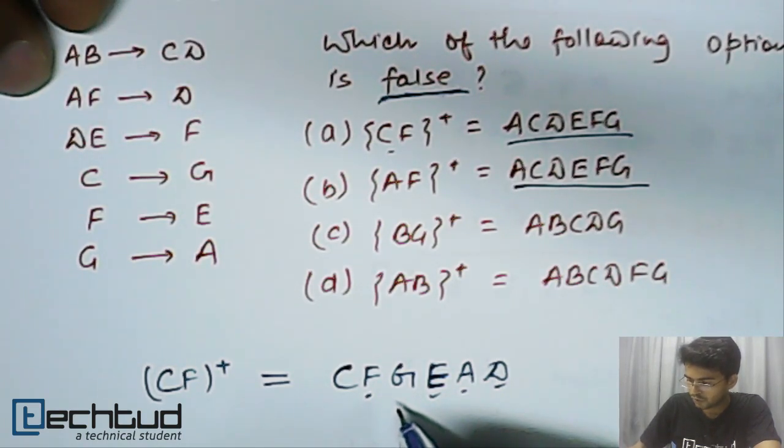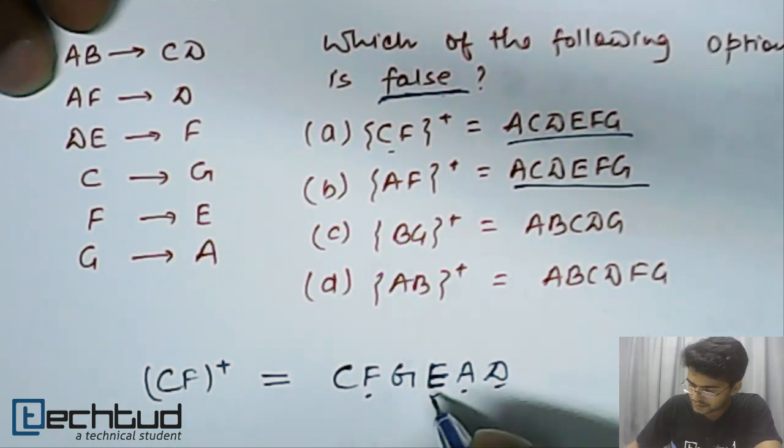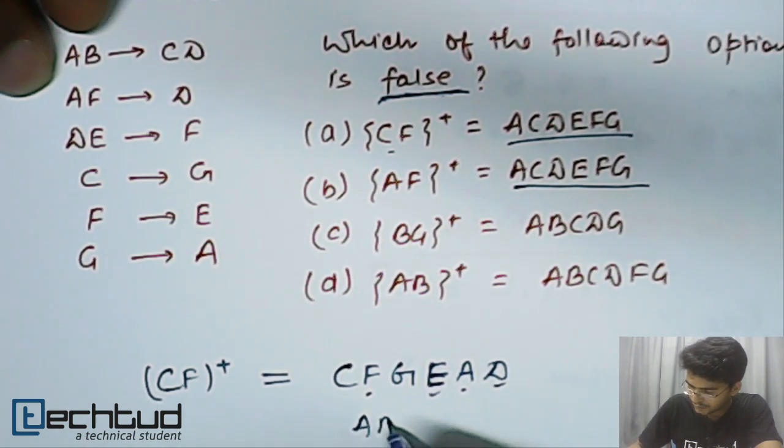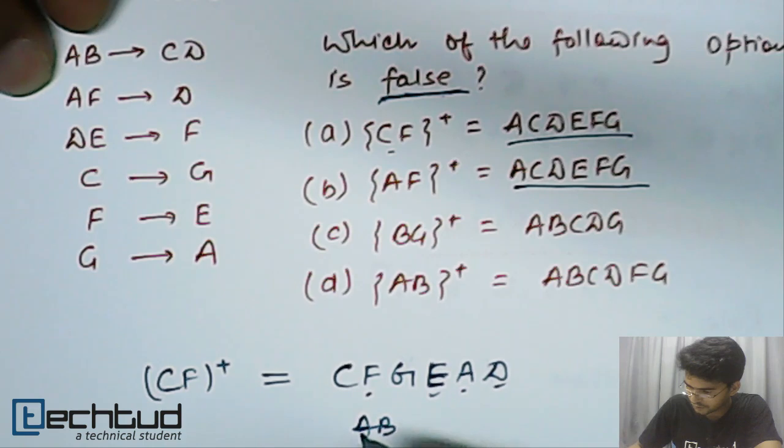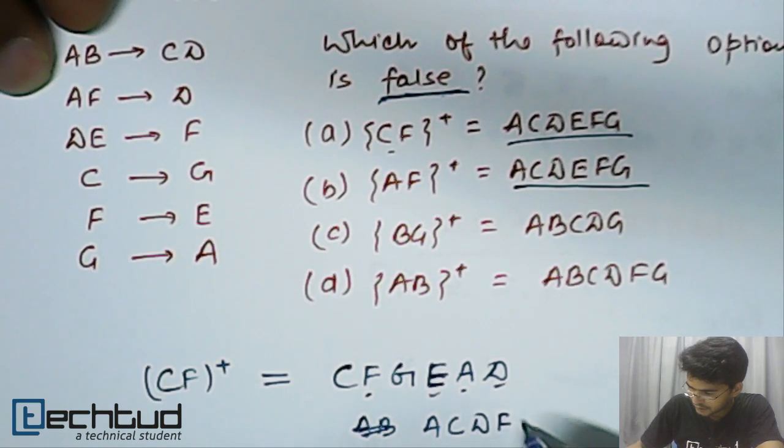So, this is all. Yes. So, it means we have A, no, B is not there. Sorry. A, C, D, E, F and G, right?